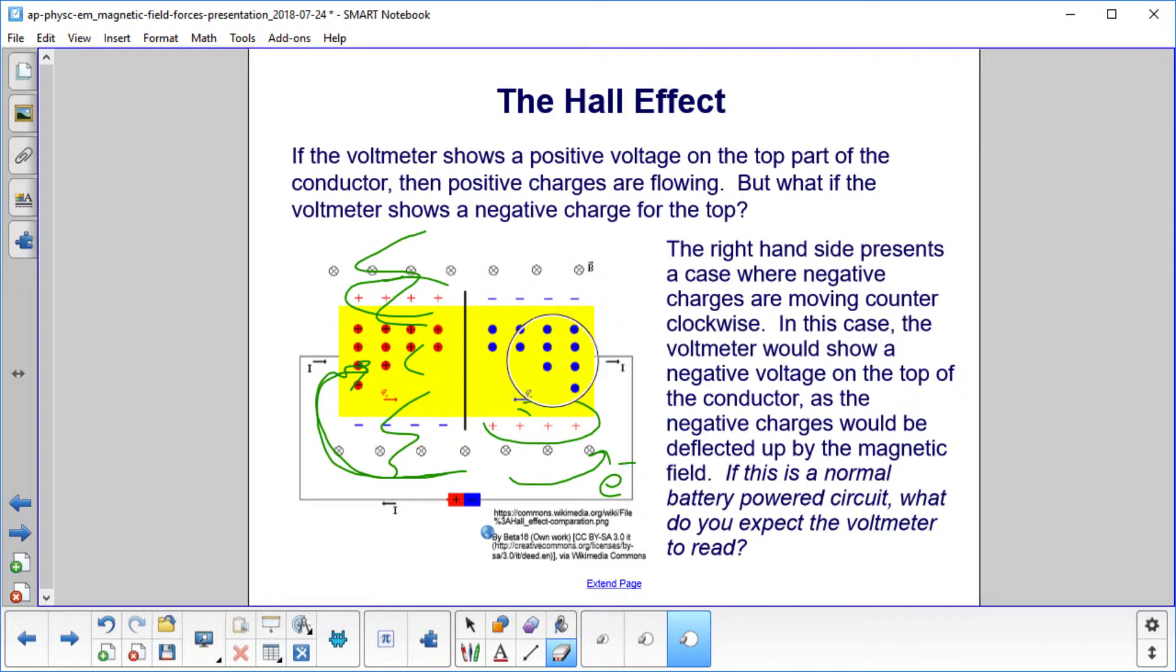If I have a voltmeter, I would measure a negative voltage up there. That means the negative charges were deflected up there by the magnetic field. We'd have this electric field created. Once the force of the electric field balanced the force of the magnetic field, the charges would just flow straight through this material.